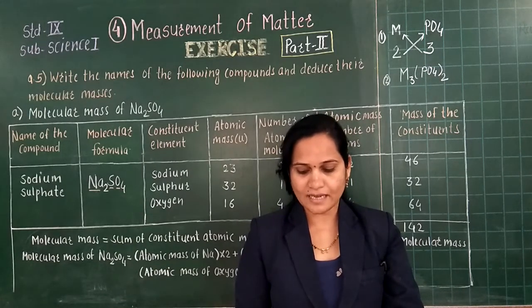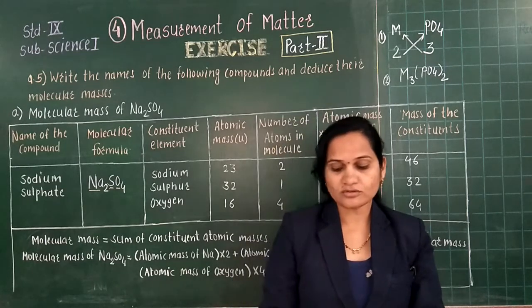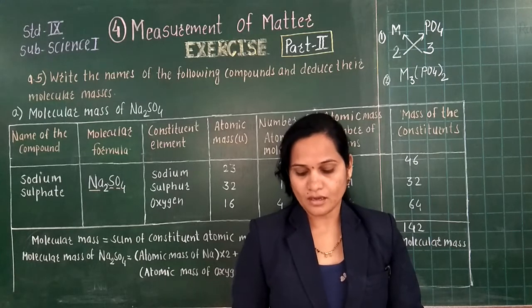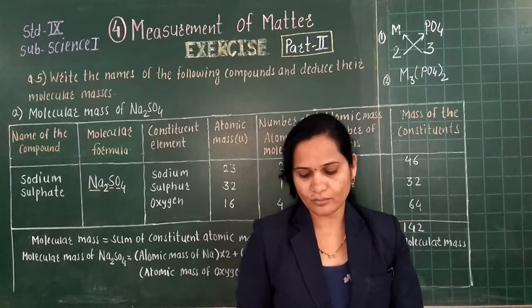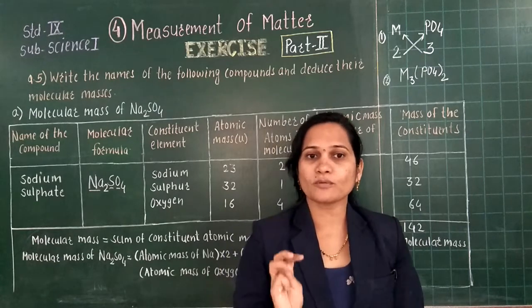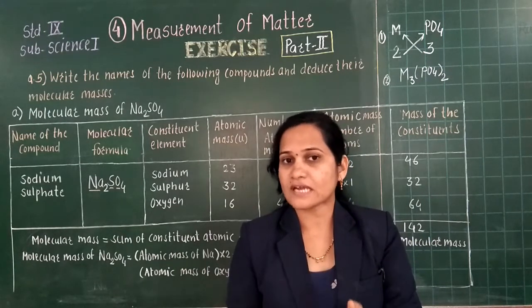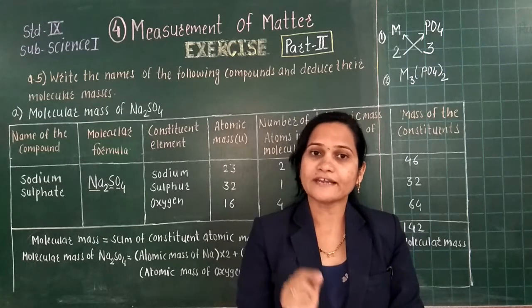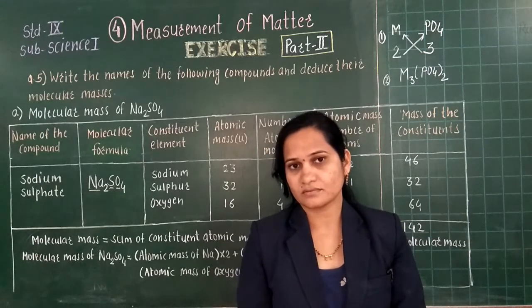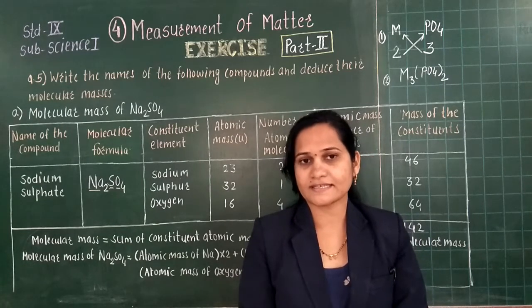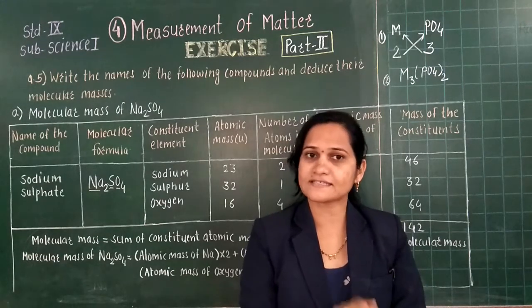Question number E: explain with examples what is meant by a mole of a substance. For this question, see page number 51 where a point on mole is given. Mention at least four important points related to the mole of a substance. When you start to solve the exercise, read the lesson carefully first, because reading the lesson is most important for your exam. All answers are there in the lesson.